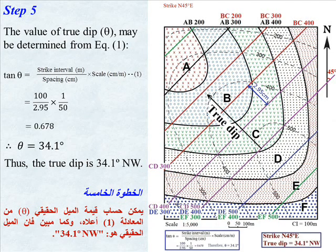Step 5. The value of true dip theta may be determined from equation 1: tan(theta) equals strike interval over spacing times scale. This equals 100 over 2.95 times 1 over 50, which gives 0.678. Therefore, theta equals 34.1 degrees. Thus, the true dip is 34.1 degrees northwest.